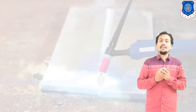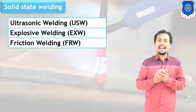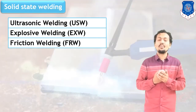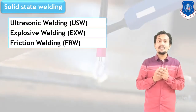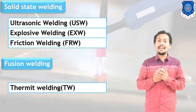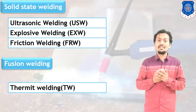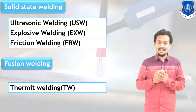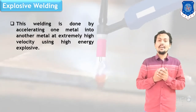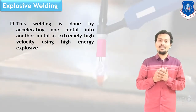Here I have mentioned the different processes for the Special Welding category: Ultrasonic Welding, Explosive Welding, and also Friction Welding. These processes are considered Special Welding Processes. Thermite Welding is also mentioned under the category of Special Welding Processes.